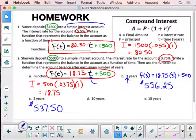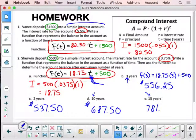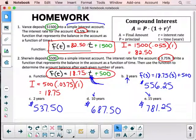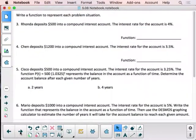If you put 10 in there for T right there, you will get $687.50 after 10 years. And if you put 15 in there for T, you end up with $781.25. So, those are the simple interest problems from the homework. Now, let's move on to the compound interest.